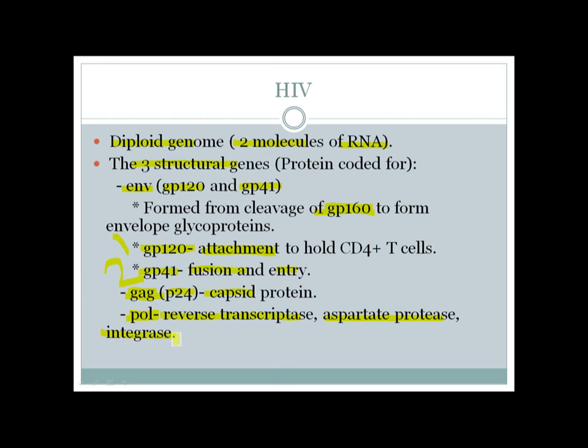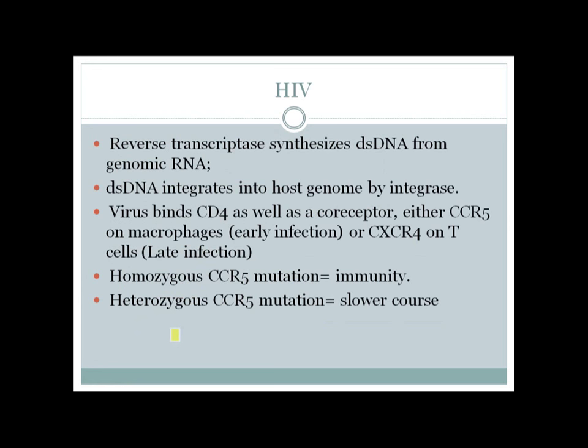Reverse transcriptase converts the RNA genome to DNA. The DNA is then integrated into the host genome by the enzyme integrase. To summarize: reverse transcriptase synthesizes double-stranded DNA from RNA, and that dsDNA then gets integrated into the host genome by integrase.